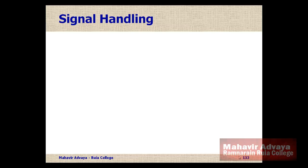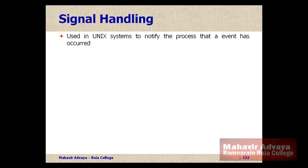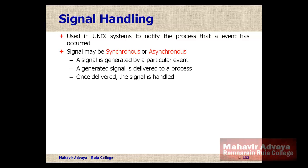The next issue to be handled with respect to threads is signal handling. A signal in Unix is used to notify a process that a particular event has occurred. Signals may be synchronous or asynchronous, and there are many different signals that are passed in the system which need to be handled.